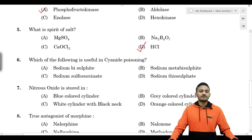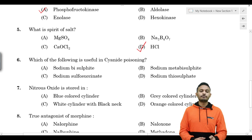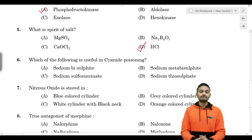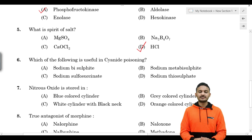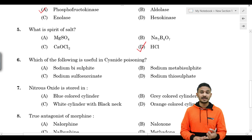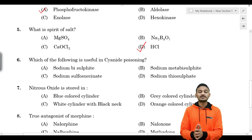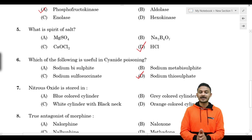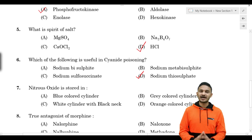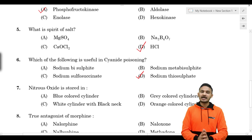Question: which of the following is useful in cyanide poisoning? Options include sodium biphosphate, sodium metabisulfate, sodium sulfosuccinate, and sodium thiosulfate. The correct answer is sodium thiosulfate. This is a direct pharmacology question about cyanide poisoning treatment.